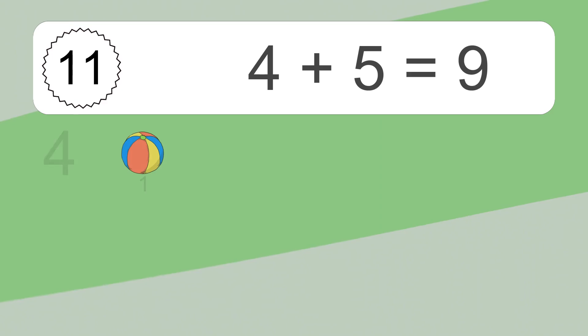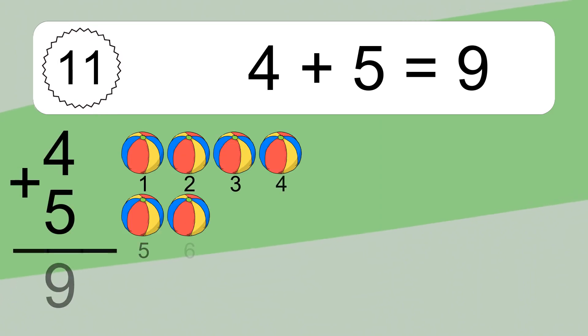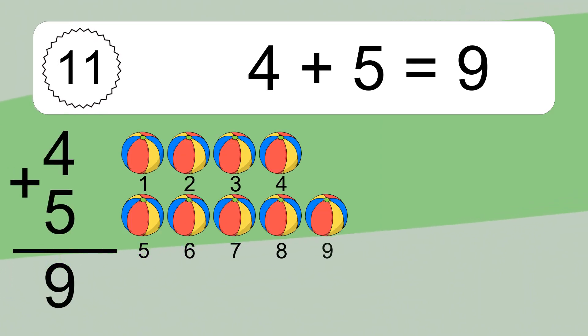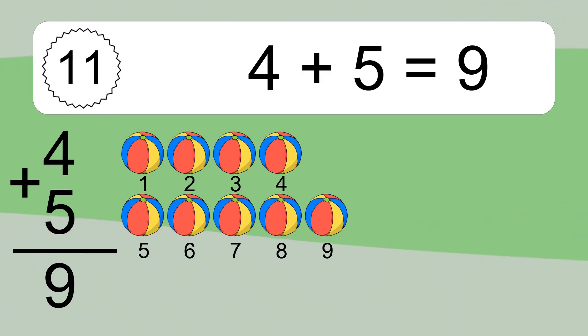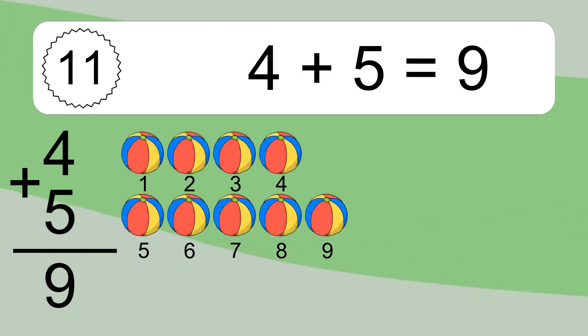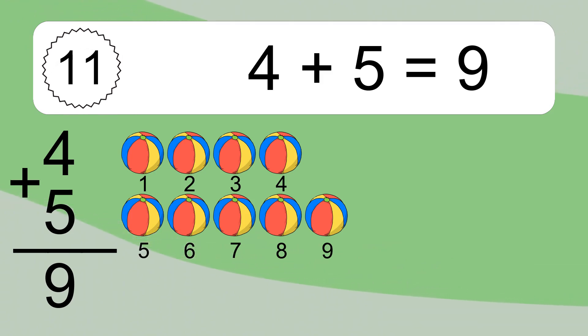4 plus 5 equals what? 4 plus 5 equals 9. Let's count it: 1, 2, 3, 4, 5, 6, 7, 8, 9.